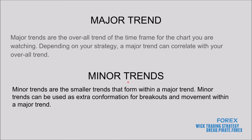Major trends are the overall trend of the time frame for the chart you're watching, depending on your strategy. Your major trend can correlate with your overall trend — if you're swing trading, generally your major trend correlates right along with the overall trend. But if you're scalping, that may not always be the case.